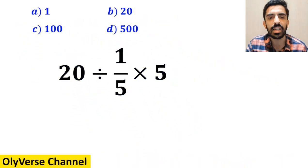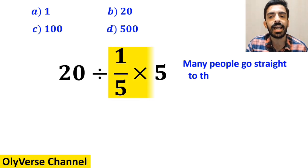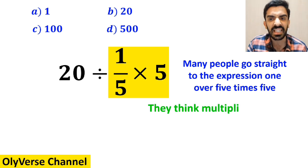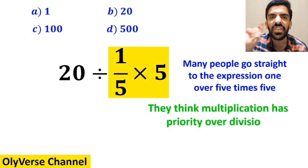At the beginning of solving this question, many people go straight to the expression 1 over 5 multiplied by 5, which I've highlighted in yellow, because they think multiplication has priority over division.